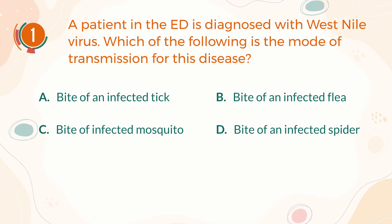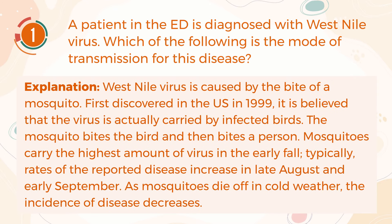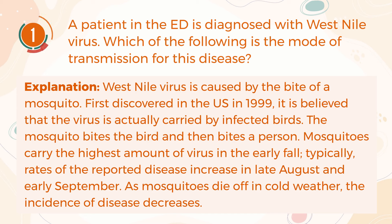The correct answer is C, bite of an infected mosquito. West Nile virus is caused by the bite of a mosquito. First discovered in the U.S. in 1999, it is believed that the virus is actually carried by infected birds. The mosquito bites the bird and then bites a person. Mosquitoes carry the highest amount of virus in the early fall. Typically, rates of the reported disease increase in late August and early September. As mosquitoes die off in cold weather, the incidence of disease decreases.